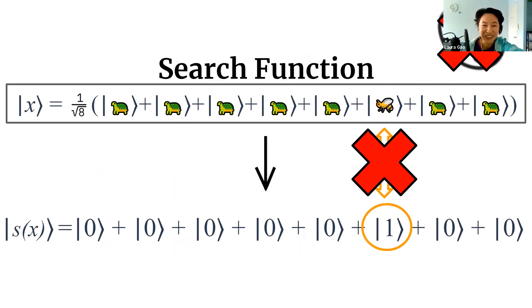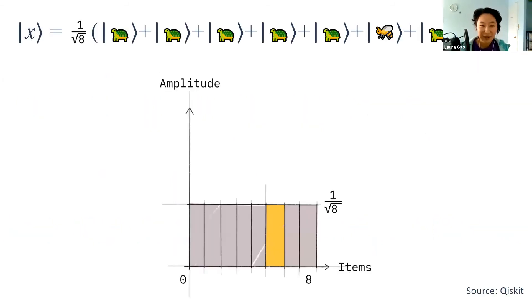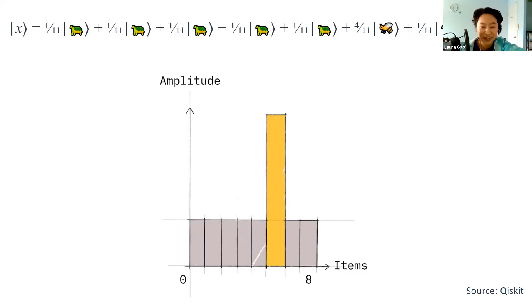It might seem that all hope is lost since we can't look at this point, but there's something else we can do. Let's look at the wave more closely. Each of the locations, or the eight emojis, have the same height. The height of the wave is equal to the probability of us finding that emoji there. Right now, because the heights are equal, there's equal chance of being at any of the eight emojis. But what if we can increase the height of only the bee? Then there will be a much higher probability of us finding the wave at that location.